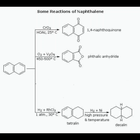The reduction reaction: naphthalene reduced at 30 degrees Celsius and one atmospheric pressure gives tetralin. Further reduction with a nickel catalyst at high pressure and temperature gives decalin. Thank you for your patient listening.